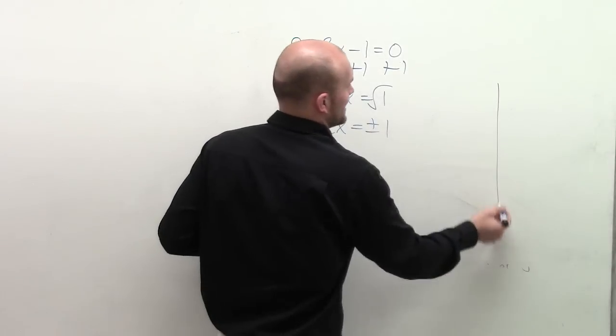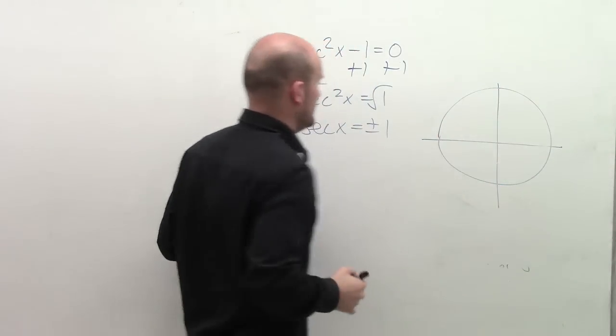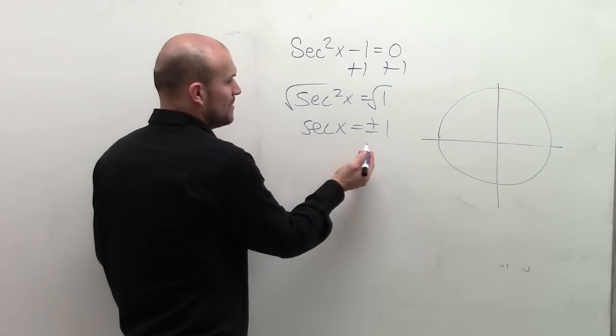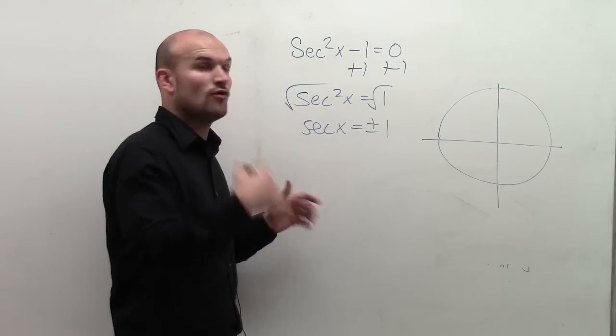By looking at the unit circle, what we notice is that secx = ±1. Well, remember, secant is equal to 1 over x.